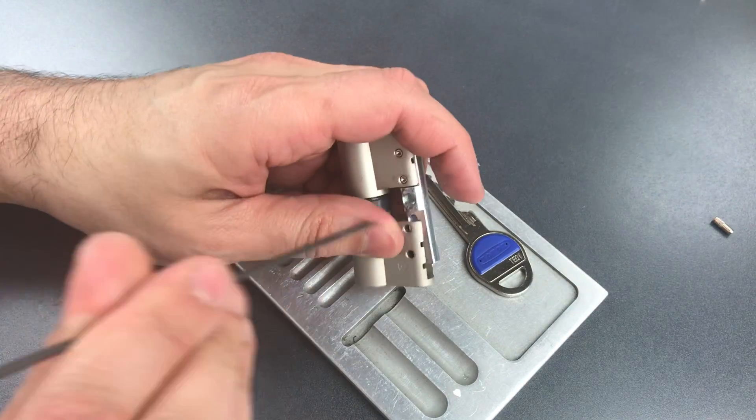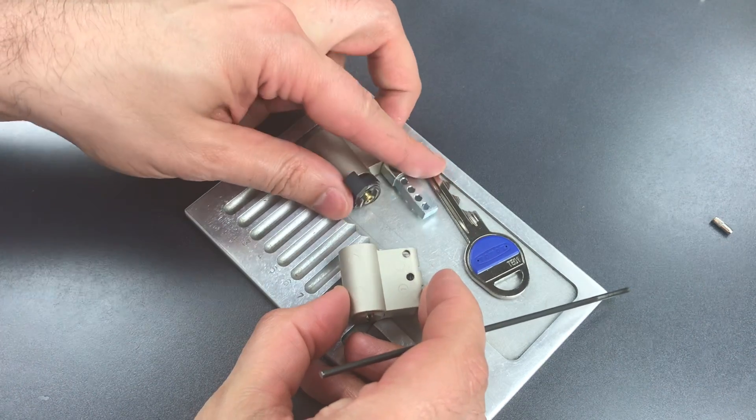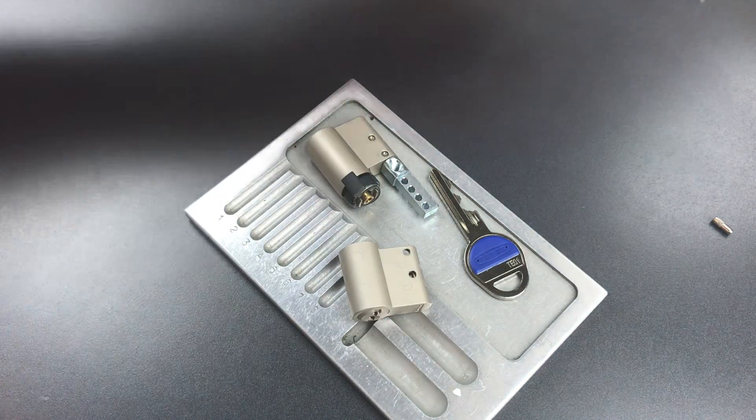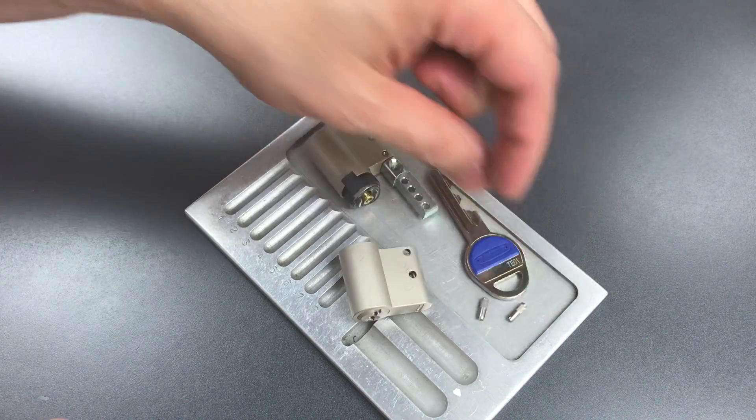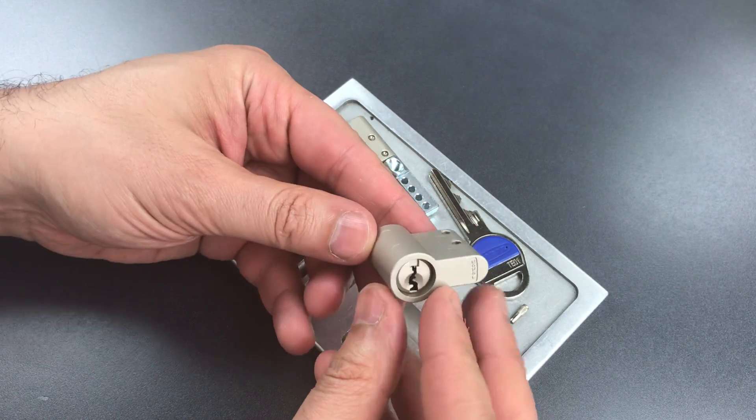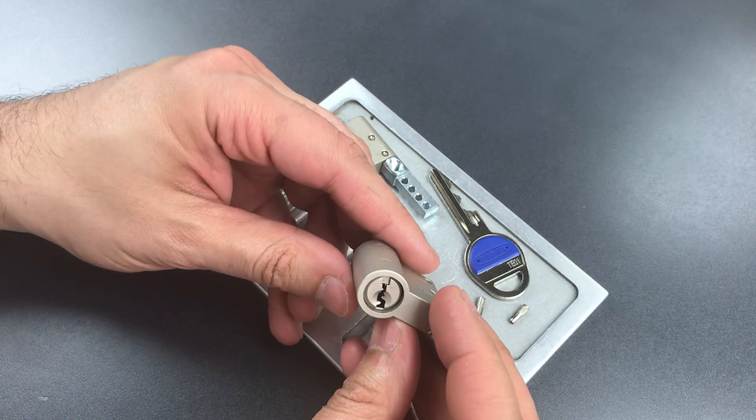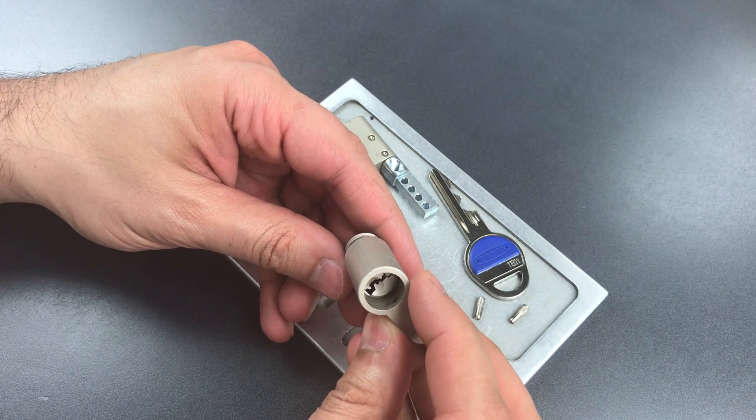Okay, we've got the two pins out. Now this is actually a lock which disassembles in reverse from what you would normally expect. So I'm going to pull this cylinder out.